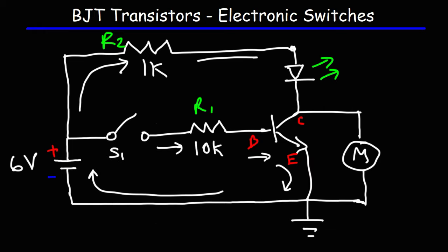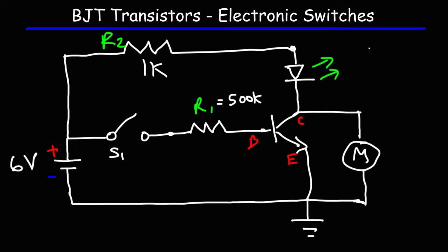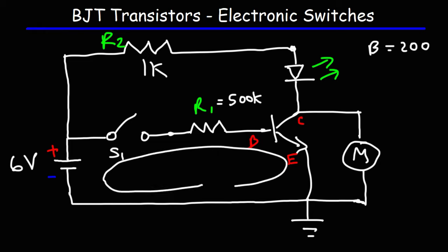But let's calculate the voltage at point C. In order to do that, we need to calculate the current flowing in each branch. Now, before we solve this, let's increase R1 to 500 kilo-ohms — that's going to be a much better value. And beta — let's say that beta for the transistor is 200. So with this information, go ahead and calculate the base and collector currents, as well as the voltage that the multimeter will read. We'll need to be familiar with Kirchhoff's voltage law, which states that the sum of the voltages in a closed loop must add to zero.